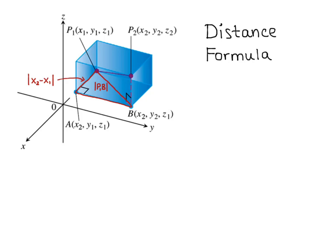The side of the triangle between point P1 and A is |X2 − X1|, and the side length between A and B is |Y2 − Y1|. Applying the Pythagorean Theorem, we get: |P1B|² = |X2 − X1|² + |Y2 − Y1|².